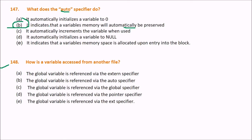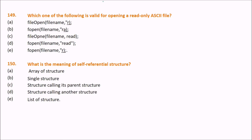How is a variable accessed from another file? The answer is A: a global variable is referenced via the external specifier — the 'extern' keyword. Now, which of the following is valid for opening a read-only ASCII file?